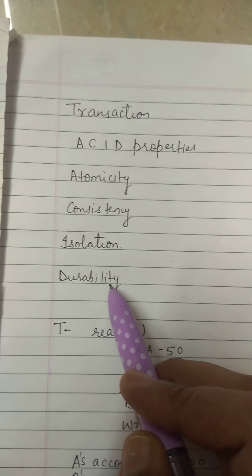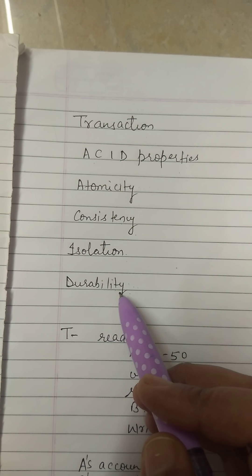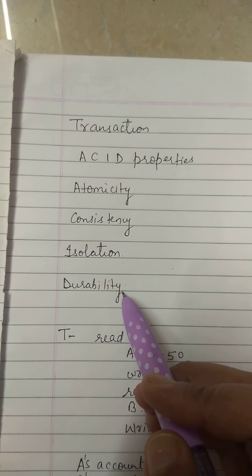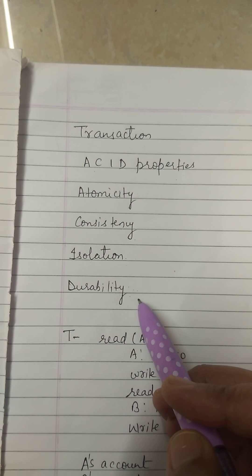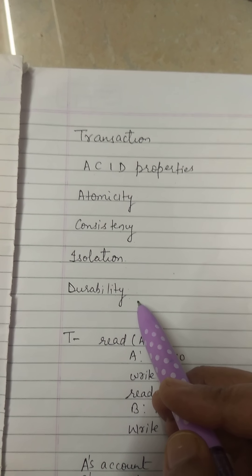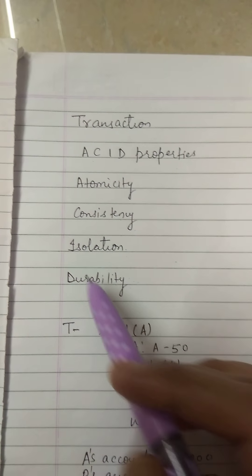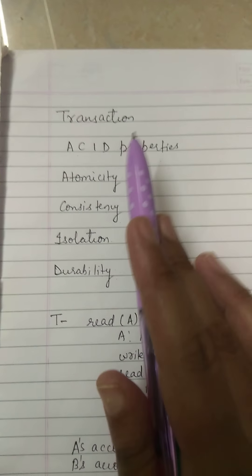And now what is durability? After a transaction completes successfully, the changes it has made to the database persist even if there is system failure. These are the ACID properties of a transaction.